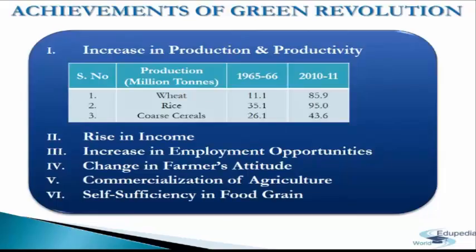Now we come to the achievements of the Green Revolution. There were innovative changes in Indian agriculture due to the Green Revolution. The first achievement is the increase in production and productivity. The Green Revolution facilitated manifold increase in food production, which relieved the Indian economy from continuous food shortages. The High Yield Variety Program was limited to crops of wheat, rice, maize, jowar, and bajra — non-food grains were not included in the new strategy.